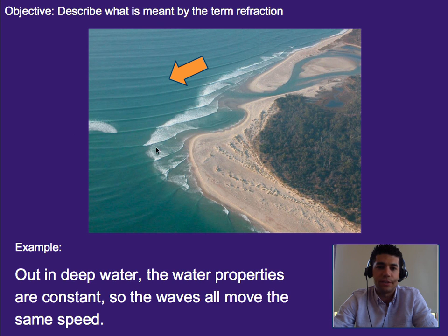So one example of this is ocean waves move faster when they are in deep water and slower when they are in shallow water. So as we get closer to the coastline here, the water gets shallower and so the waves are going to move at different speeds.